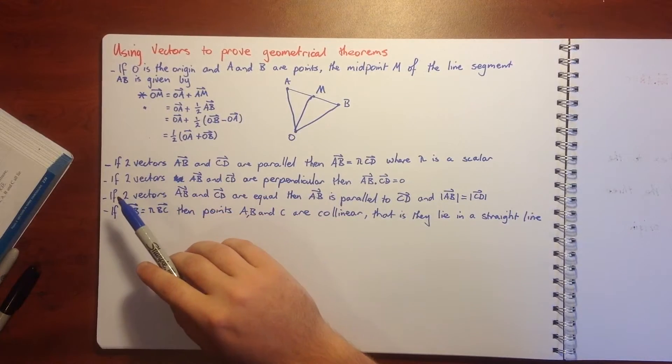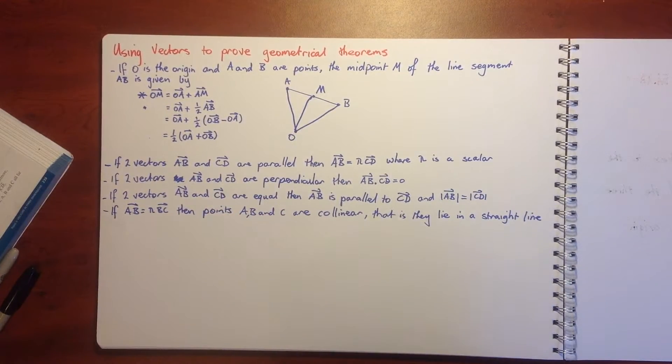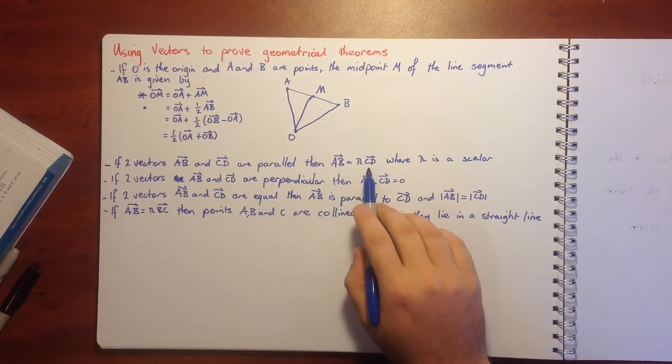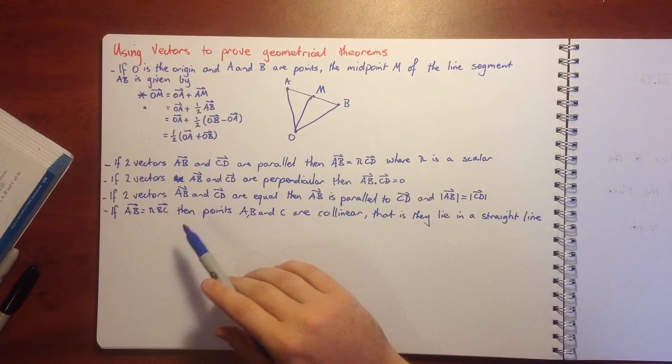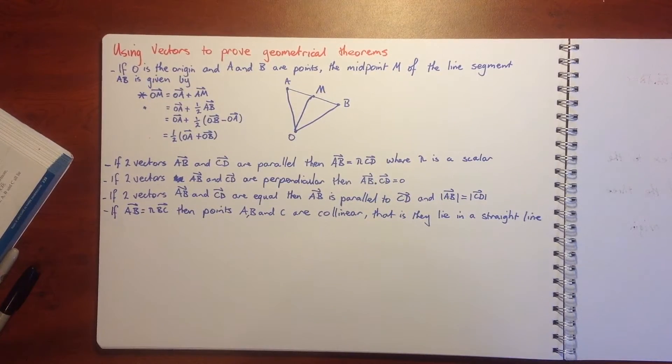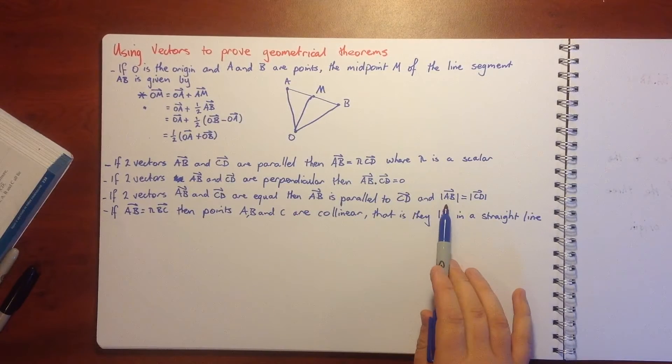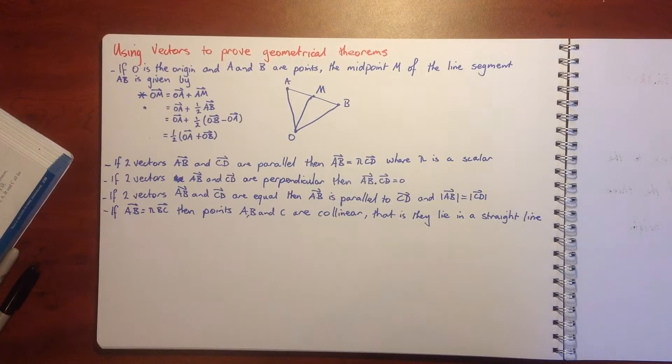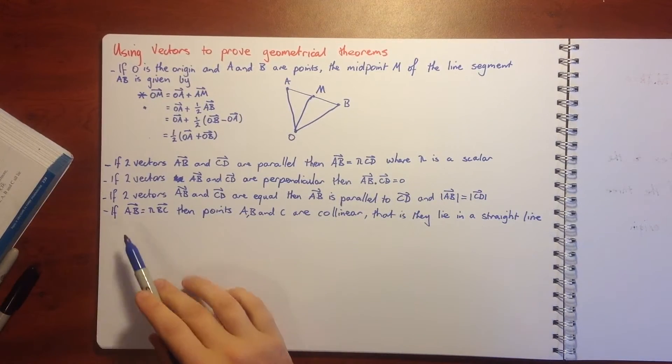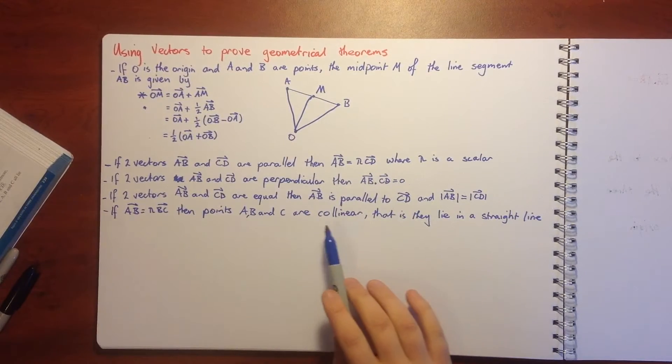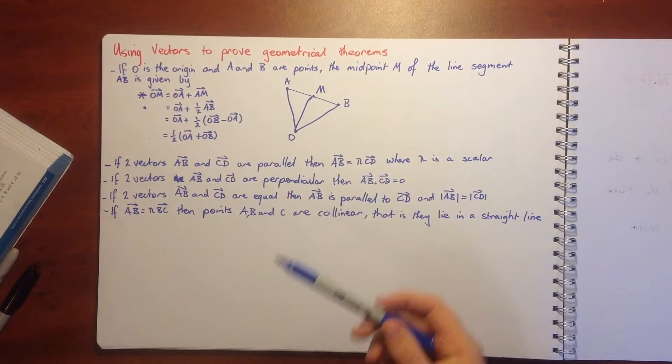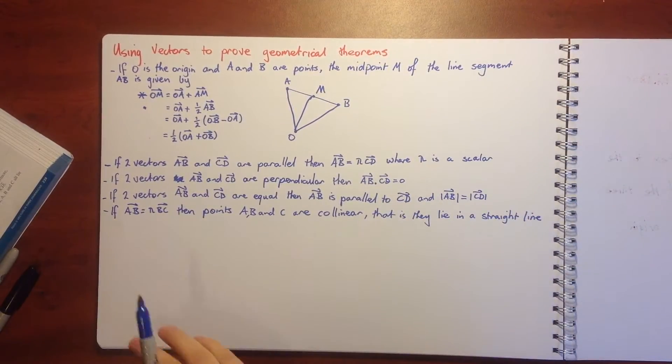If two vectors AB and CD are parallel, then AB is a multiple of CD, so lambda is just a scalar. If two vectors AB and CD are perpendicular, then the dot product of those two vectors equals zero. If two vectors AB and CD are equal, then AB is parallel to CD and the magnitude of AB equals CD. If AB is a multiple of BC, then the points A, B, and C are collinear, which is a straight line.